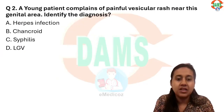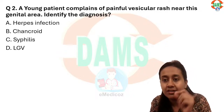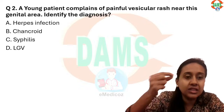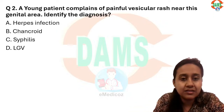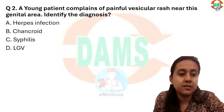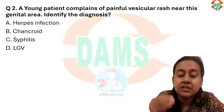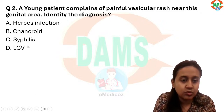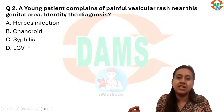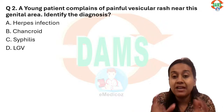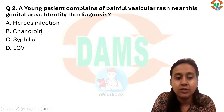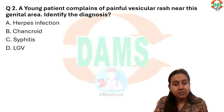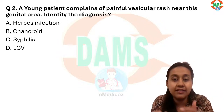The next question: a young patient complains of painful vesicular rash near the genitals. When you see vesicular eruptions on the genitals, the classical diagnosis becomes herpes genitalis — herpes simplex virus 2. It manifests with painful vesicular rash. Many students mentioned that chancroid also presents with painful genital rash, but the only difference is there are no vesicles in chancroid. You will never see any preceding history of vesicles in a chancroid patient.